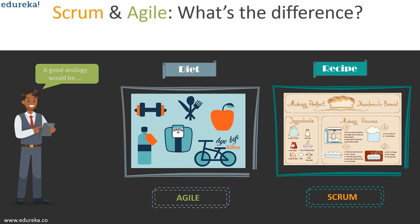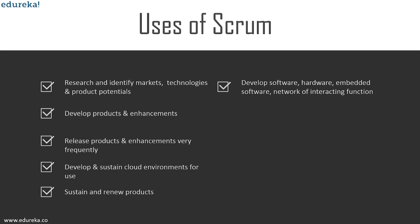Scrum was initially developed for managing and developing products starting in the early 1990s and has since been used extensively worldwide. It is used for research to identify markets, new technologies, and product potentials; to develop products and enhancements; to release products very frequently; to develop and sustain cloud and operational environments; and to sustain and renew products. Scrum has found widespread adoption across diverse domains including software, embedded systems, hardware, schools, automation, autonomous vehicles, and government.